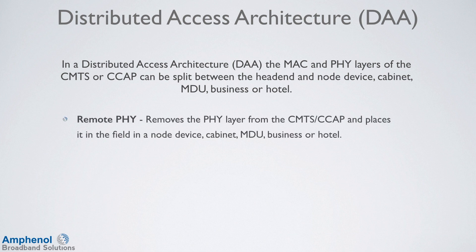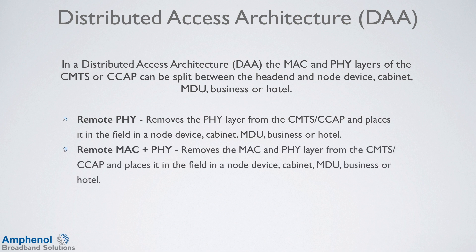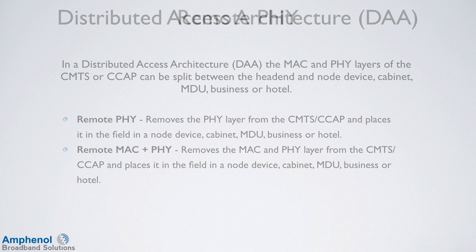With Remote PHY, the PHY layer is removed from the CMTS-CCAP and placed in the field — in the node device, cabinet, MDU, business, or hotel. With Remote MAC and PHY, both the MAC and PHY layers are removed from the CMTS-CCAP and placed in the field in the node device, cabinet, MDU, business, or hotel.